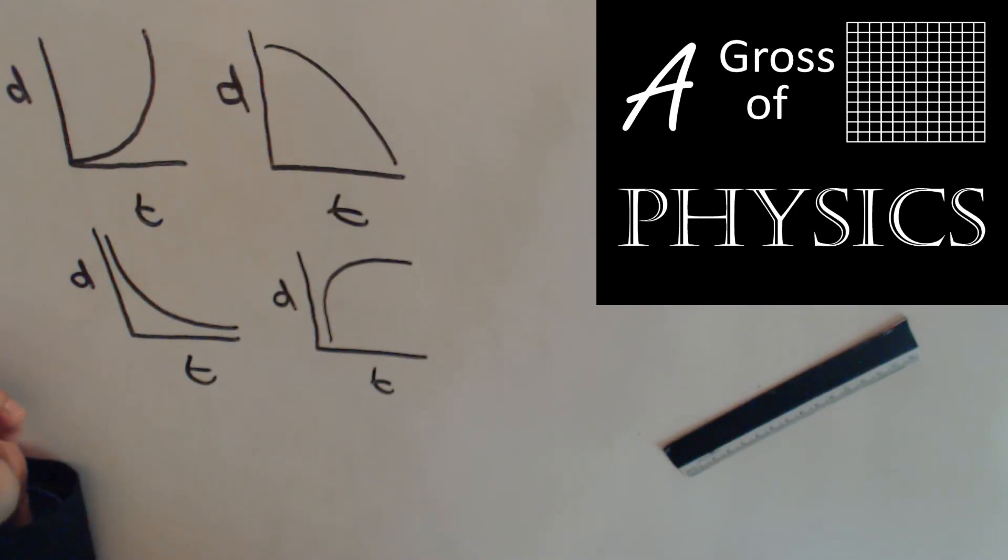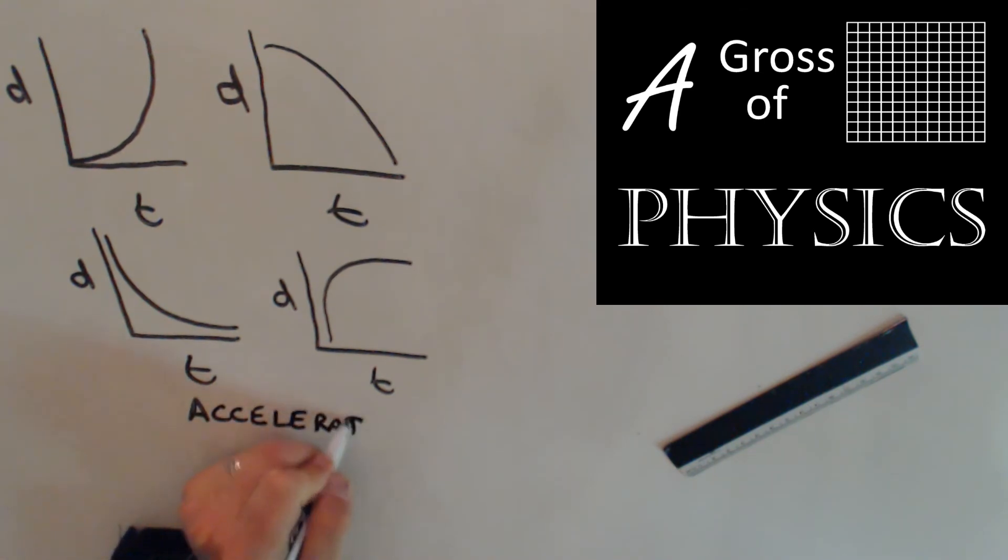Now, what we have here is four different curves, all representing different types of acceleration. Remember, any curve that you have with displacement versus time is going to represent accelerated motion. Now, these, although they're all curves, represent different types of acceleration.